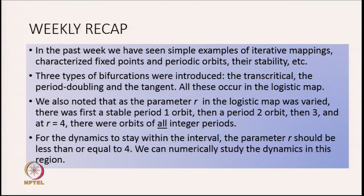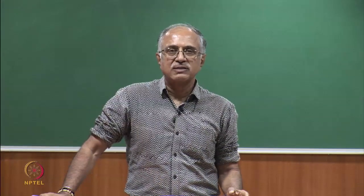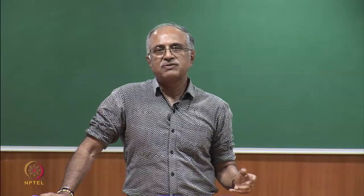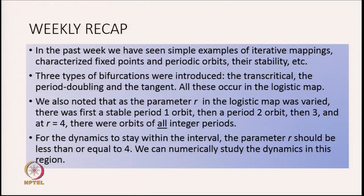We saw that as you changed a parameter in the system the behavior could abruptly change. These points of abrupt change of behavior are termed bifurcations and they come in various different types. We looked at some of the simplest forms: the transcritical bifurcation, the period doubling bifurcation, and the tangent bifurcation. All these types of bifurcations occur in the logistic map which we are going to study in some detail.